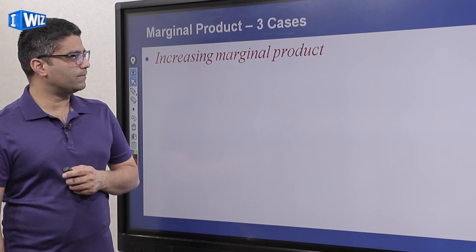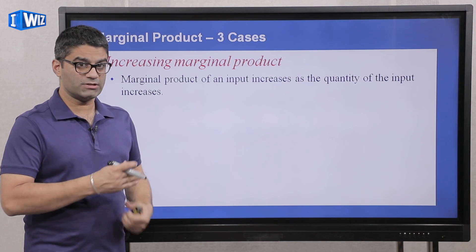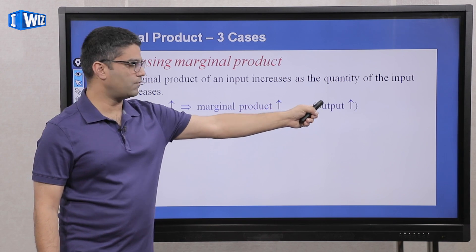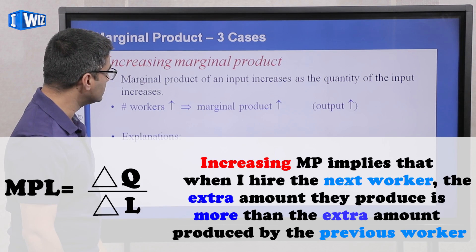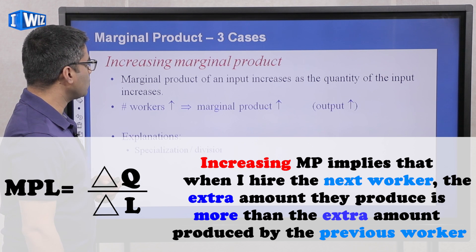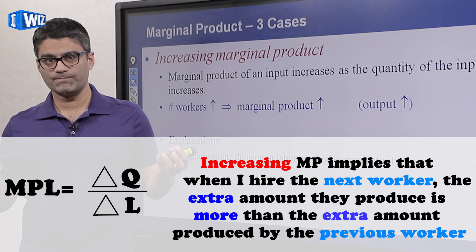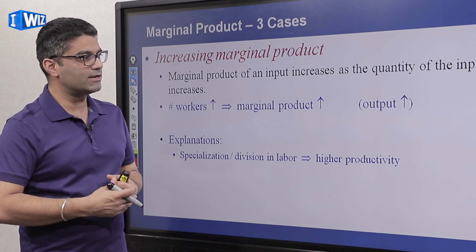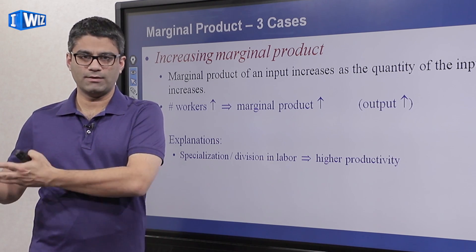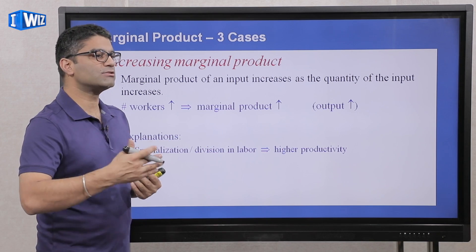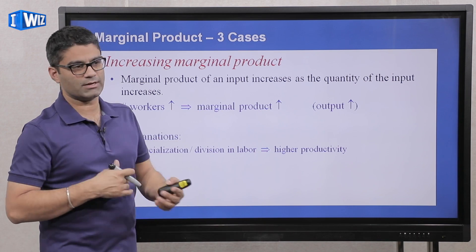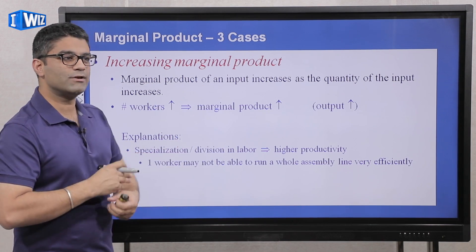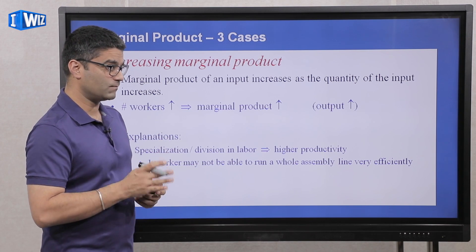The first case is increasing marginal product of labor — as you hire an extra person, the amount of output they produce increases, so each worker is more and more productive. One explanation is specialization. If the baker runs everything alone — buying raw materials, baking, cleaning, serving customers — and then hires another person, they can specialize: one handles baking, the other handles customers. Each becomes more productive, allowing the assembly line to run more efficiently.